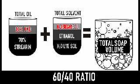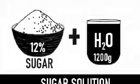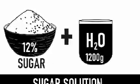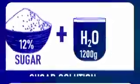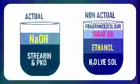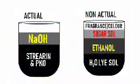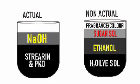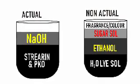We'll also be using sugar at 12% of our actual soap volume. Actual soap volume meaning the amount of oil and caustic stick together — that is the total actual soap volume. The solvents will evaporate, so we use our sugar at 12% of that figure.